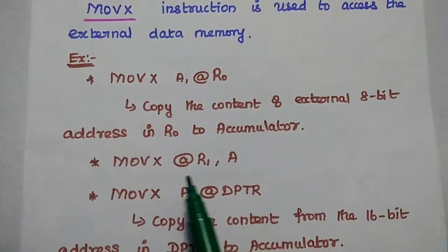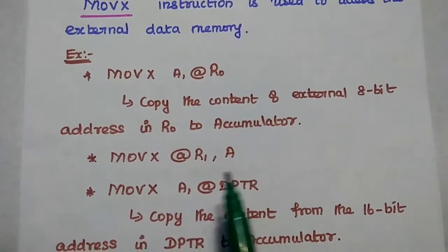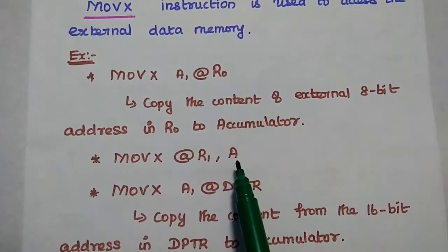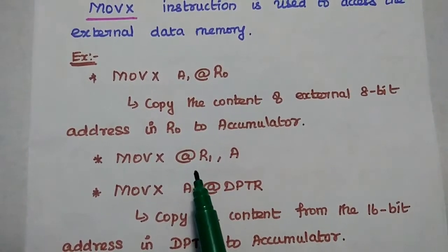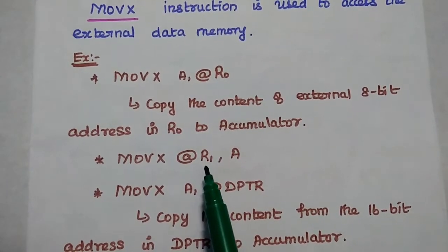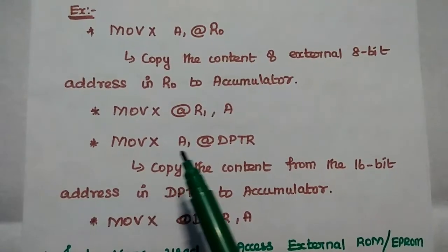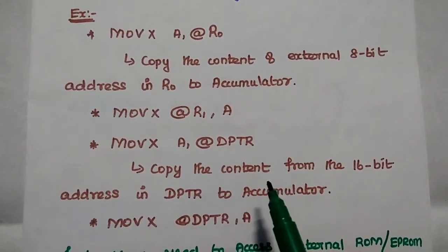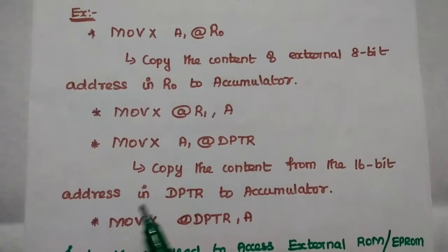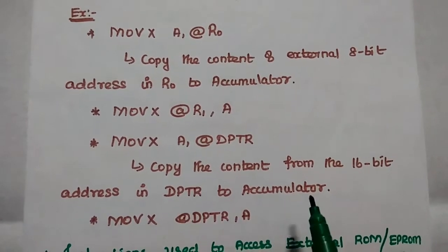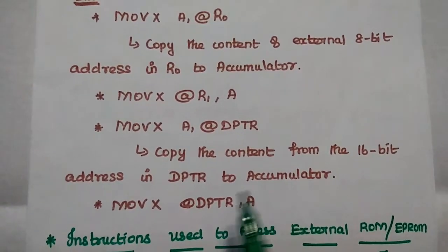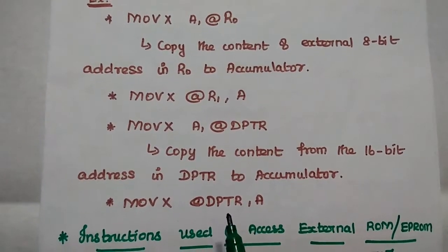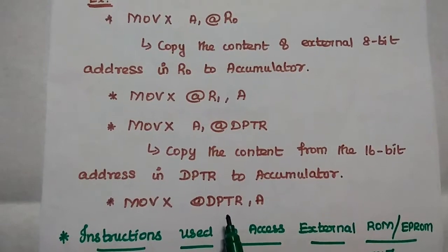Similarly, we can have MOVX @R1, A, which moves the content of this accumulator to that external memory address stored in R1 register. MOVX A, @DPTR copies the content from the 16-bit address in DPTR to this accumulator. Similarly, we can transfer the accumulator content into DPTR which holds that external memory address.